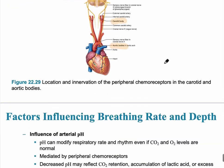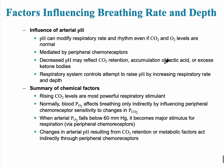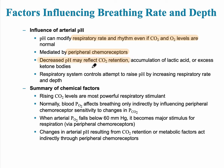Factors that influence breathing rate and depth are shown on the next slide. Arterial pH can modify the respiratory rate and rhythm even if carbon dioxide levels are normal, and it is mediated by those peripheral chemoreceptors — the ones in the aortic body and the carotid body. It's important to know that a decreased pH represents an increase in carbon dioxide in the blood.